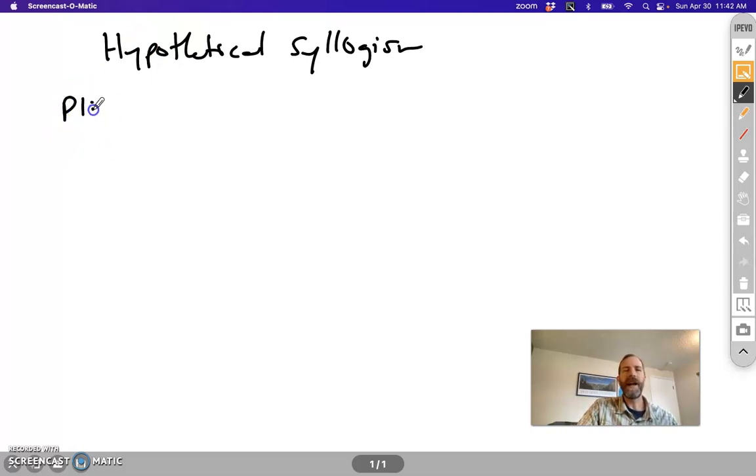So premise one in a hypothetical syllogism would be if-P-then-Q. We're very familiar with that kind of conditional at this point. Premise two then says if-Q-then-R.